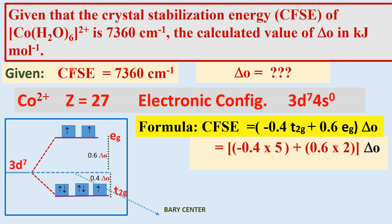For a D7 low-field complex, there are 5 electrons in T2g orbitals and 2 electrons in Eg orbitals. The T2g orbitals are lowered by 0.4 Δ₀ from the barycenter, while the Eg orbitals are raised by 0.6 Δ₀.